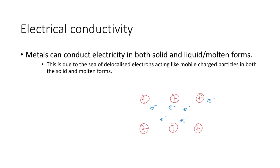Electrical conductivity. Metals can conduct electricity in both solid and liquid and molten forms, because they don't really dissolve in water, so you don't have to worry about aqueous. So the idea is that the sea of delocalized valence electrons can act like mobile charged particles in both solid and molten forms. So these little electrons, they are free to move wherever they want to go within the structure. So they can go, since they can go wherever they want, they can be mobile charged particles.